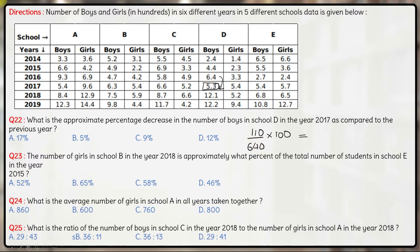The only option near 16.7% is 17%. Once you calculate precisely, this will also approximately come out to be 17%. Hence the answer to the first question is Option A: 17%.